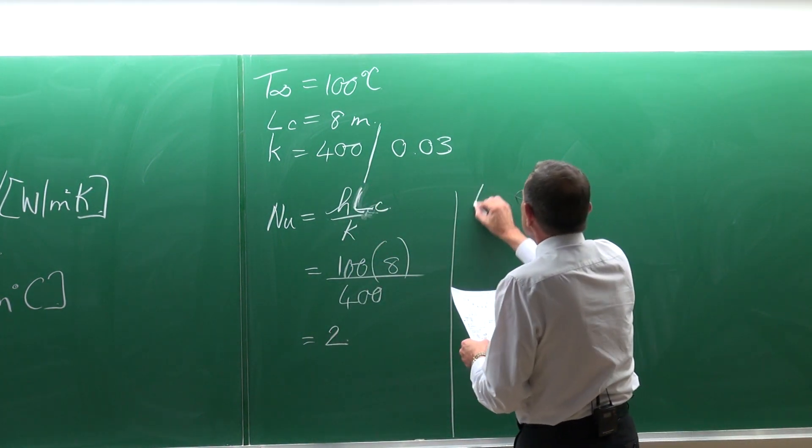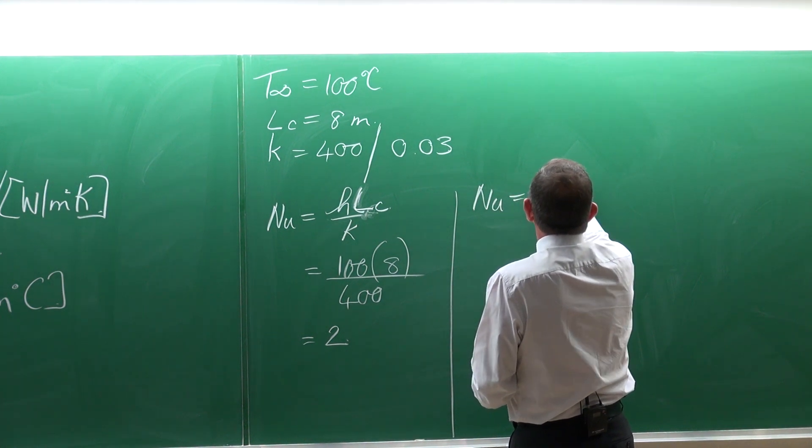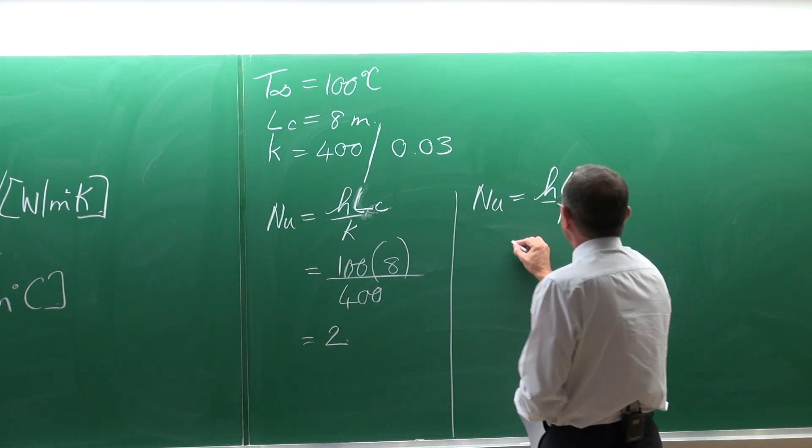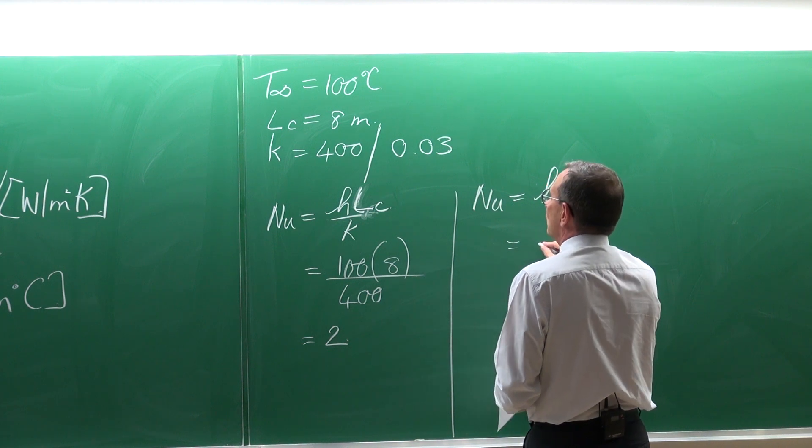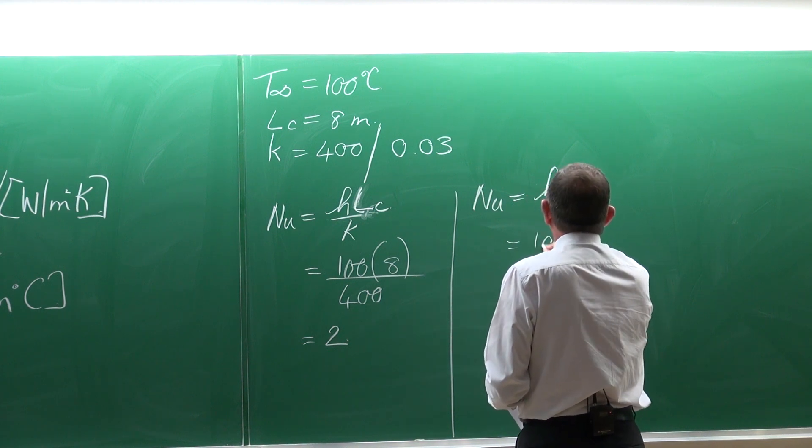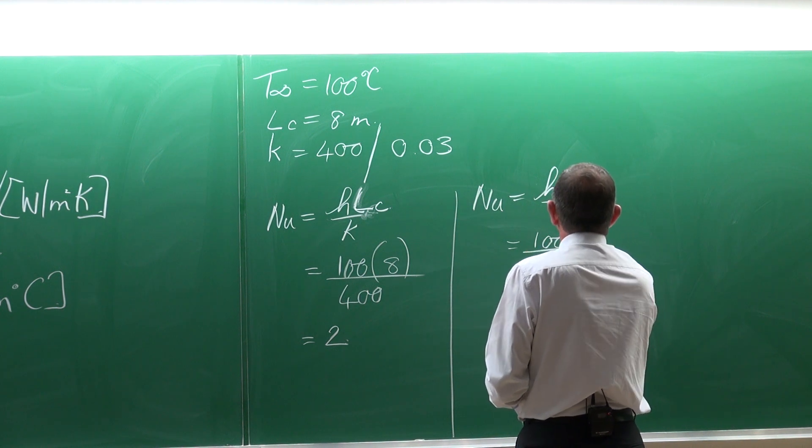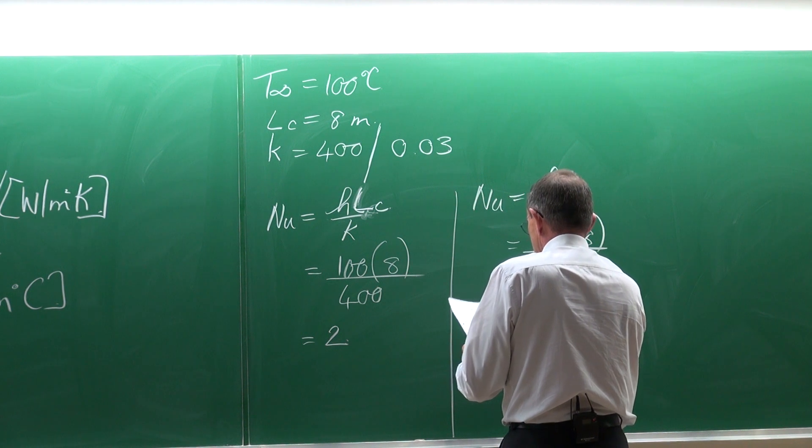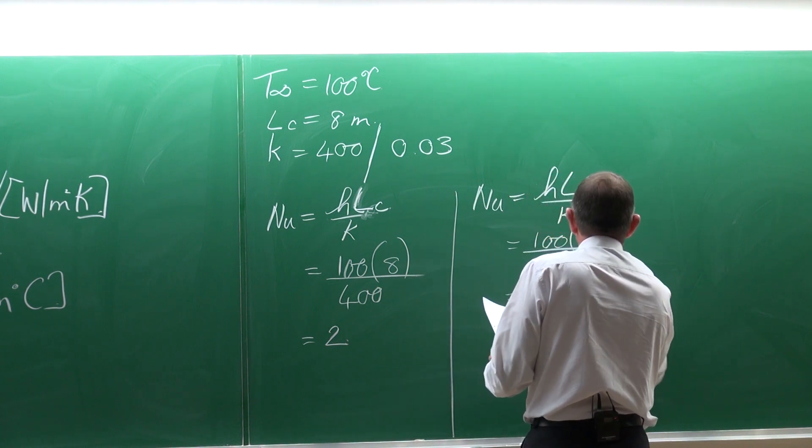And then the same for the case with a thermal conductivity of 0.03, and then the Nusselt number would be equal to 27,000.